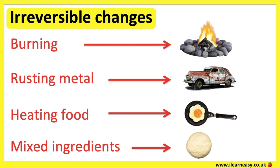So these are all examples of irreversible changes. Once a change occurs, we can't reverse back to the original material, because now a new material has formed.